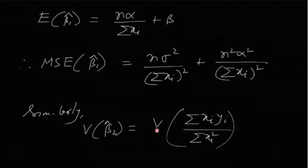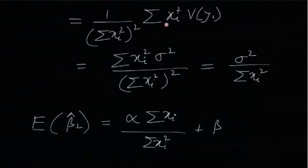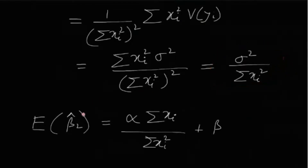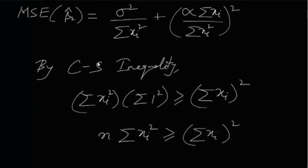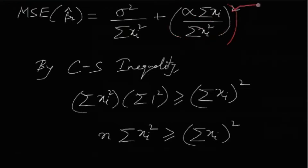Similarly, for MSE(β̂₂): Var(β̂₂) = Var(Σxᵢyᵢ / Σxᵢ²) = (1 / (Σxᵢ²)²)·Σxᵢ²·Var(yᵢ) = σ² / Σxᵢ². Then MSE(β̂₂) = σ² / Σxᵢ² + [α·Σxᵢ / Σxᵢ²]².